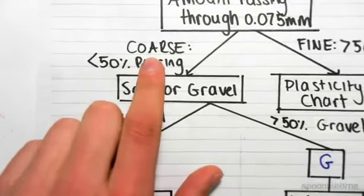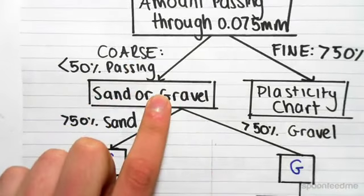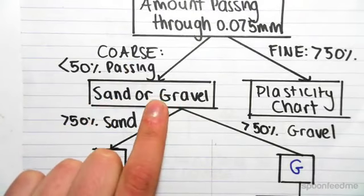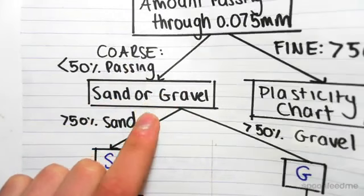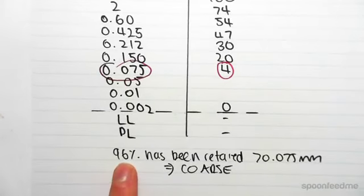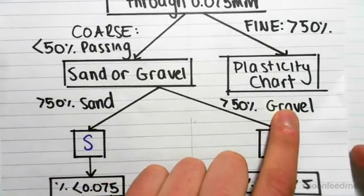So we determined it's coarse, so we come down this branch. Now we need to work out whether the amount retained, that 96% which has been retained, is the majority sand or the majority gravel.